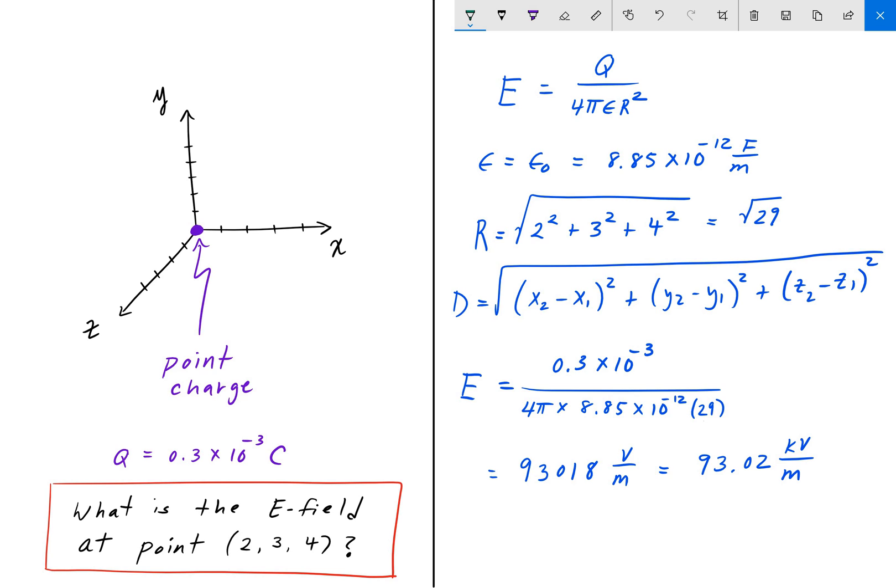So that is our answer. That is the electric field at some distance away from this point charge, where this point charge is 0.3 times 10 to the negative 3 coulombs and it has a radius of square root of 29. So did you get that? Let me know in the comments below. And I'll see you guys in the next video. Until then, enjoy engineering.